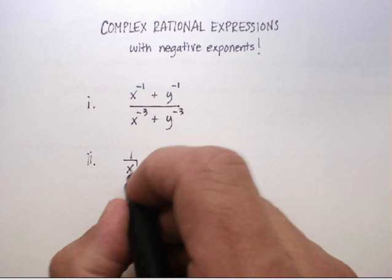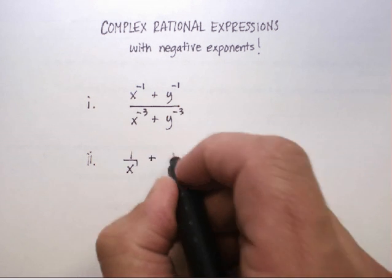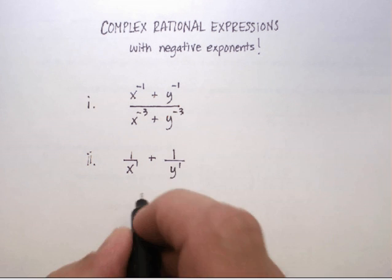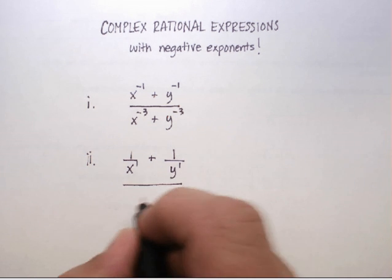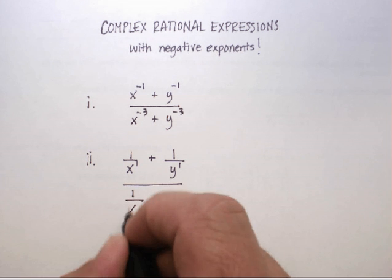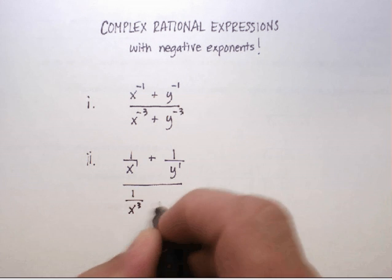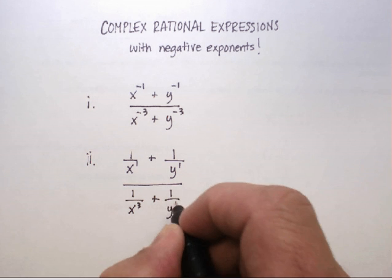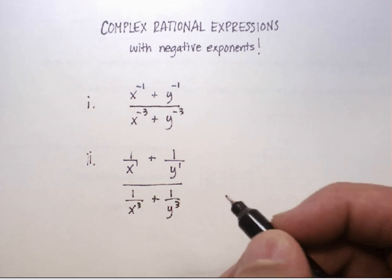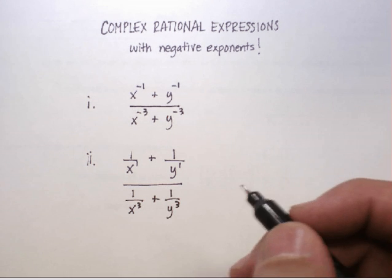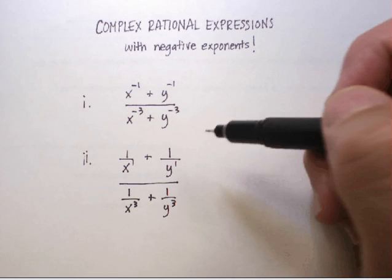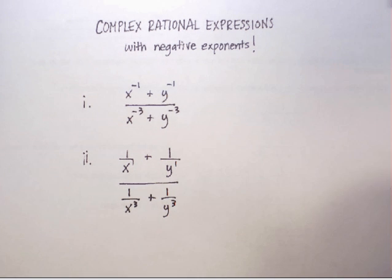So let's go ahead and change each one of these according to the negative exponent. It becomes 1 over x to the first, plus 1 over y to the first, over 1 over x cubed plus 1 over y cubed. That gets rid of the negative exponents, which tend to confuse people.